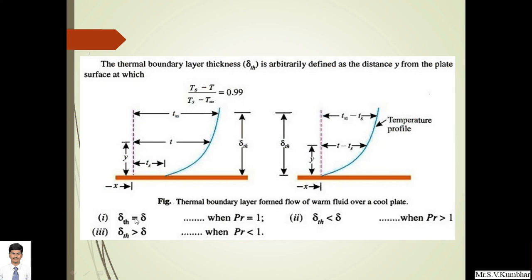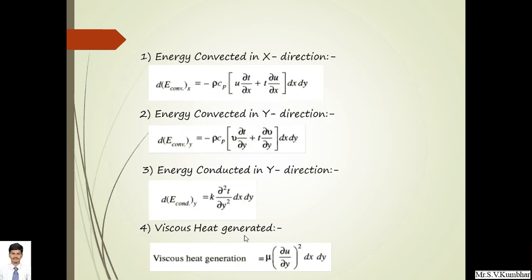There are three sub-relations: thermal boundary layer δ_th equals hydrodynamic boundary layer δ when Prandtl number equals 1; thermal boundary layer is less than hydrodynamic boundary layer when Prandtl number is greater than 1. We haven't studied Prandtl number yet. In the next video lecture, we will definitely learn Prandtl number.